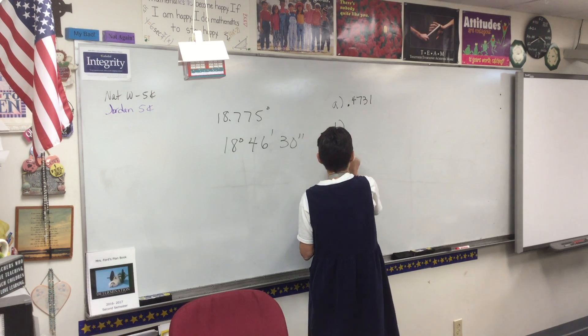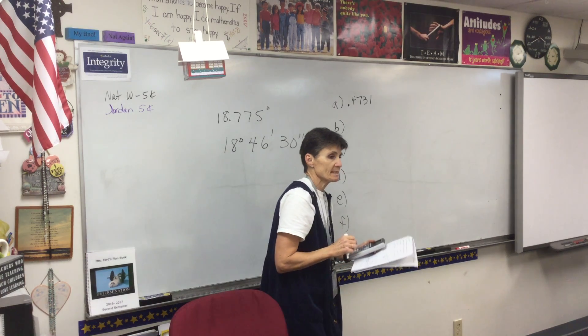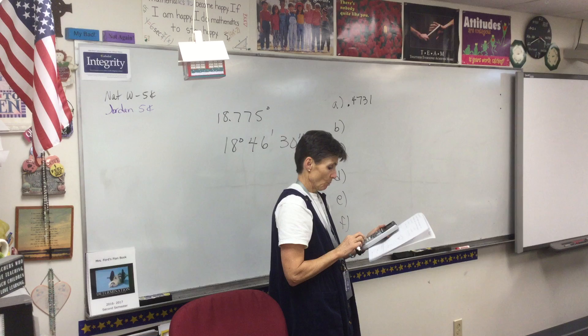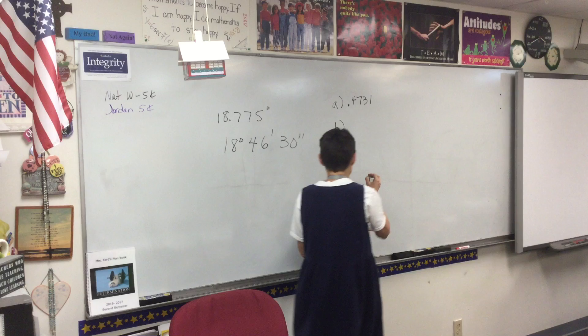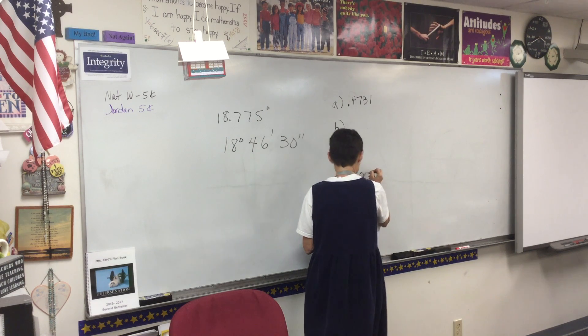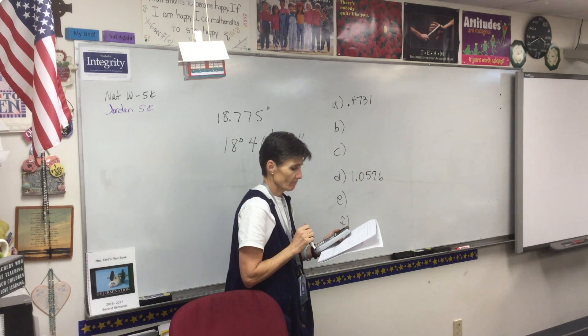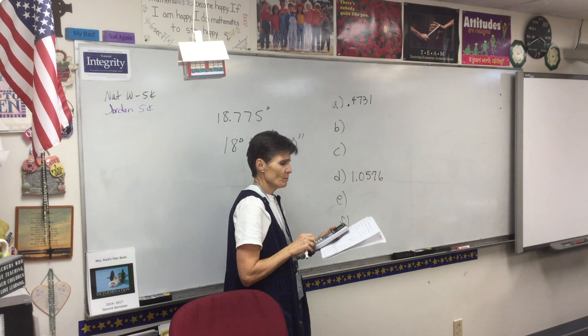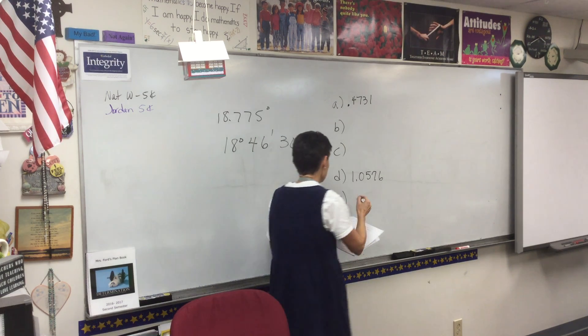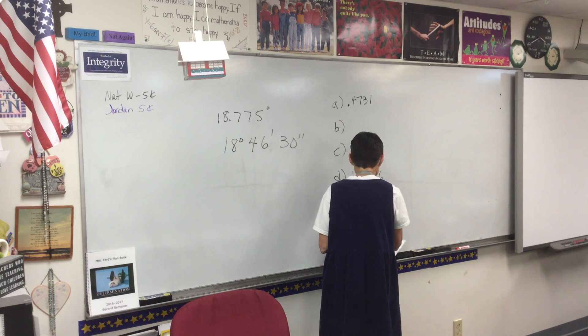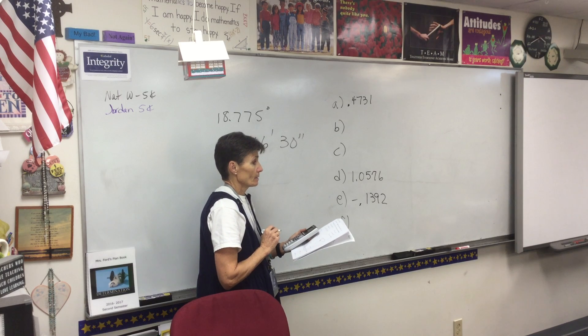Now I'm temporarily skipping B and C, so I'm going to go to D. How do I do a secant? 1 divided by cosine 19. 1.0576. If you missed the next one, you need your head examined. Cosine 98, negative .1392.